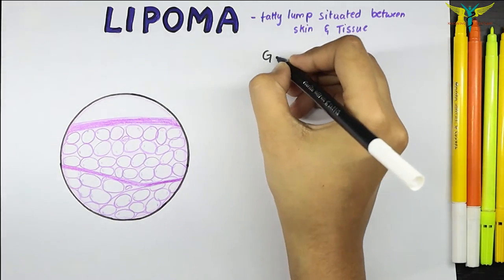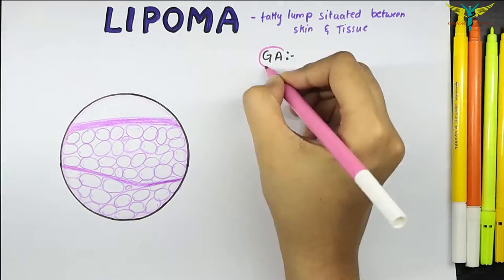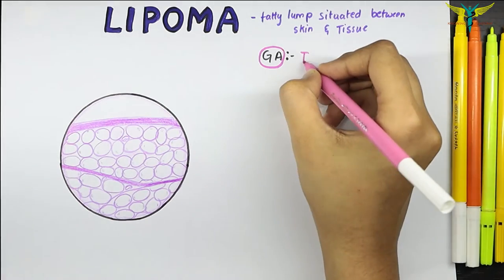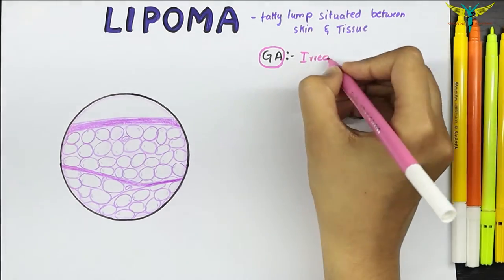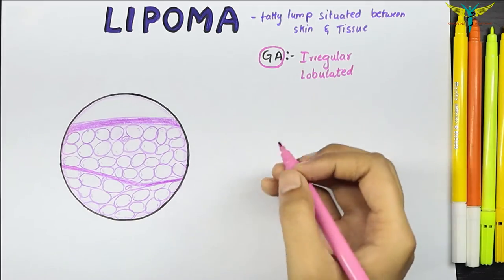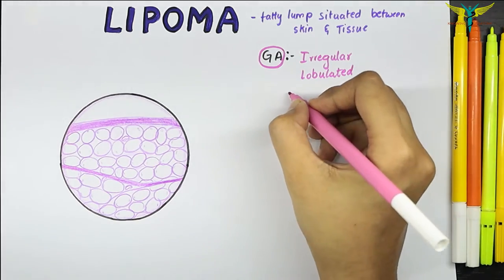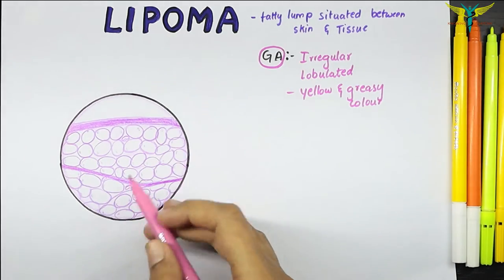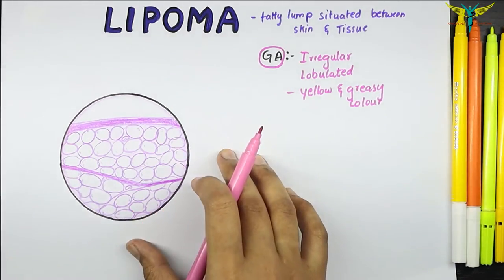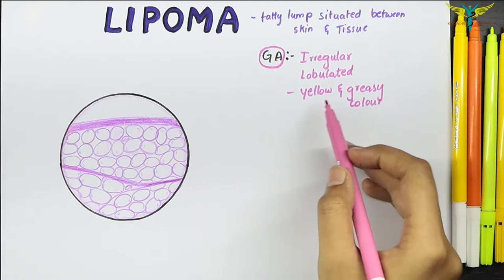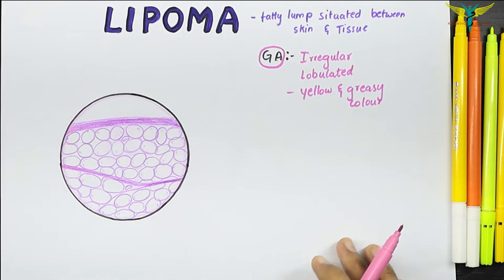Starting with the gross appearance: lipomas are usually irregular and lobulated, and they look yellow and greasy in color. This is because most lipomas are composed of adipocytes — fat cells — which give them that greasy yellow appearance.